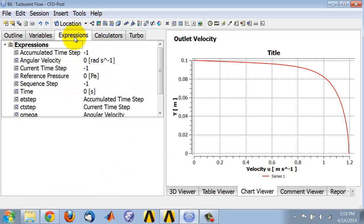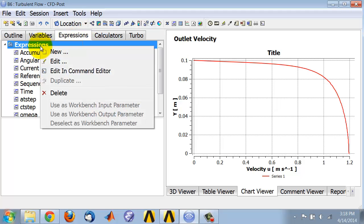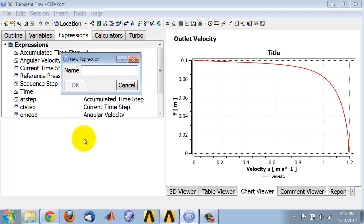First, I'll go into expressions and create a non-dimensional quantity corresponding to the distance along the radial direction. I'll come into the expressions tab, right click, and say new. I'll give it a name—I'll say r non-dimensional—and then I'm going to create a variable from this, so I'll just call this non-dimensional expression.